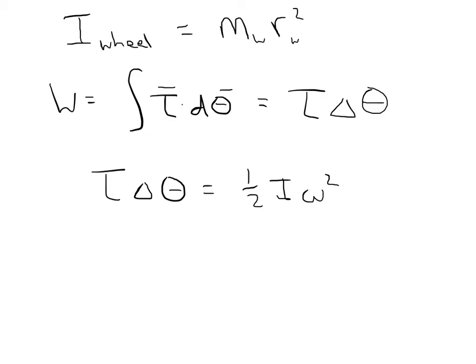Just to refresh your memory, this is the work that's done, T delta theta, and this is the change in energy, and that is omega final squared, because the initial angular velocity is zero, because you're starting from keeping things still.